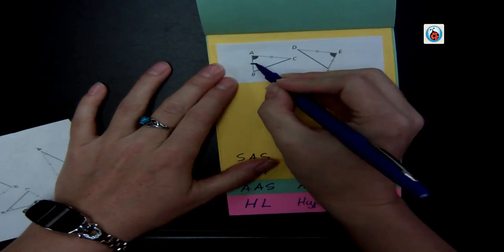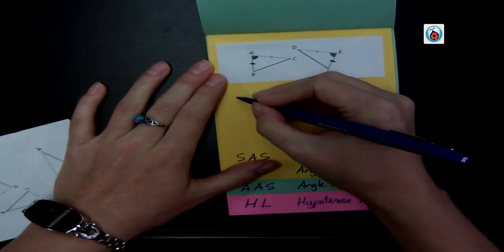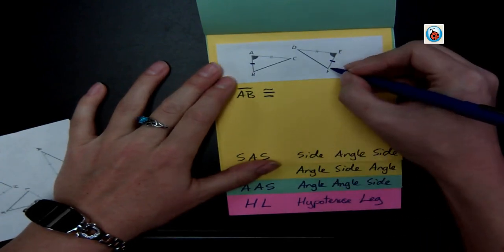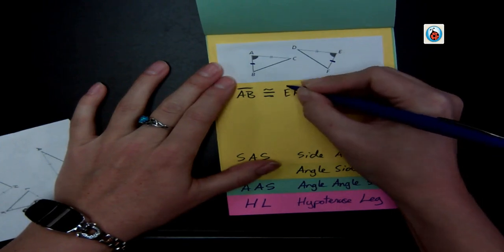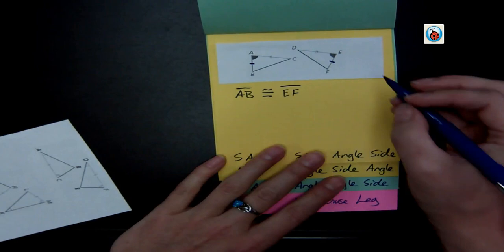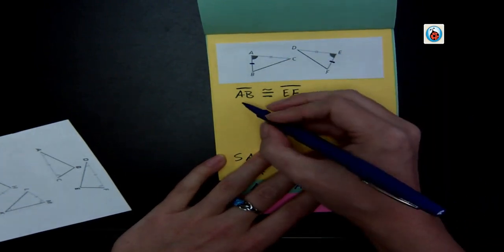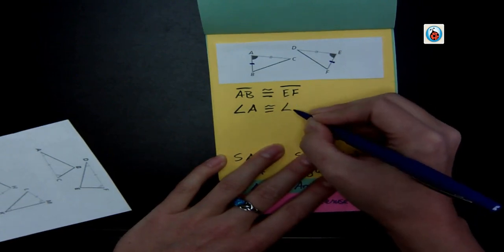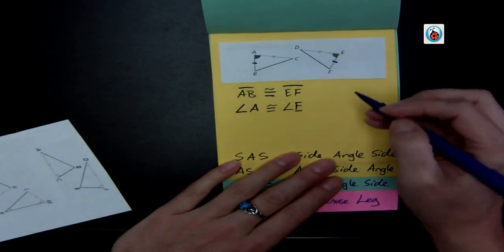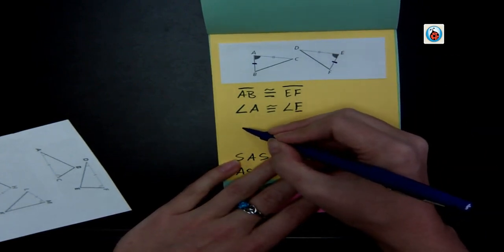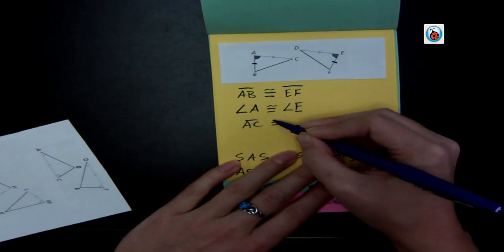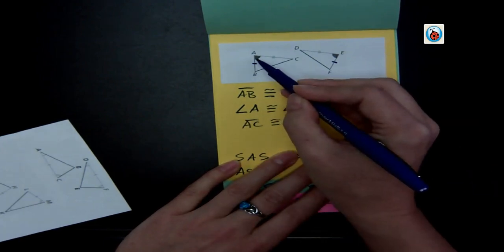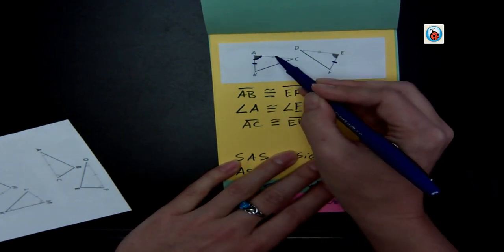And I start by labeling again what's congruent. And so I look, these ones both have one mark on them, so AB is congruent to EF. Then I look at the congruent angles that are shown for me in the middle, and so that is angle A is congruent to angle E because they've shown that to me. And then my side AC is congruent to ED. And so this time I have a side labeled, I have an angle sandwiched in between it, and then another side labeled.